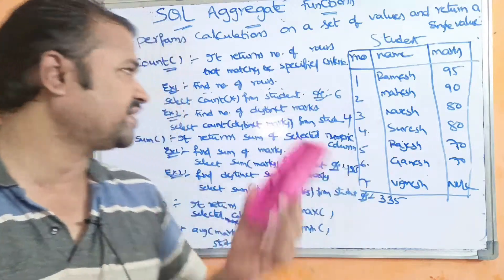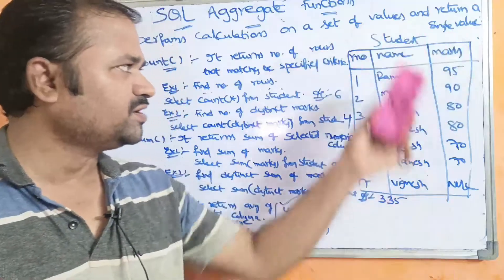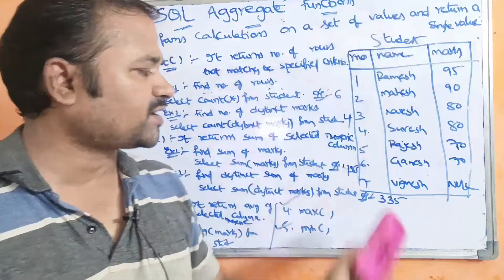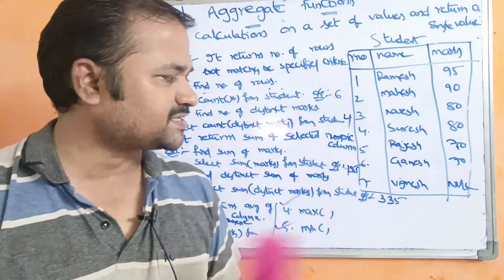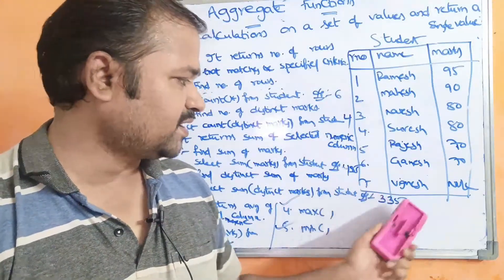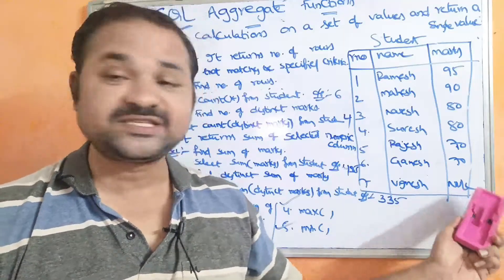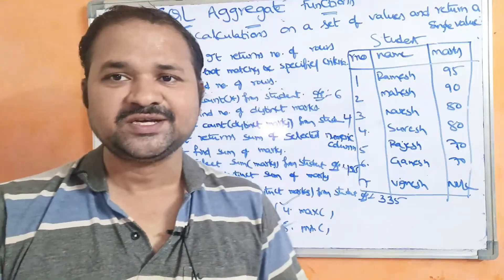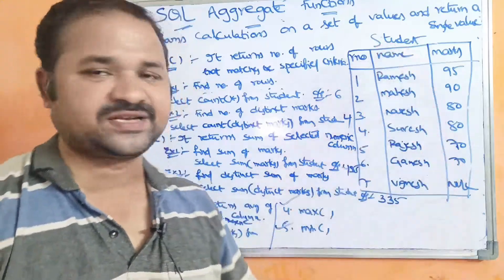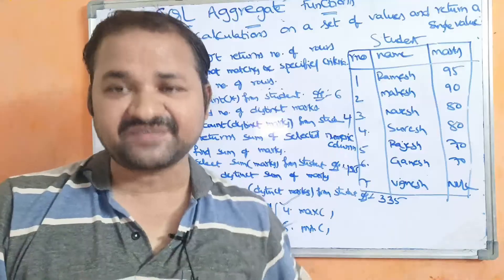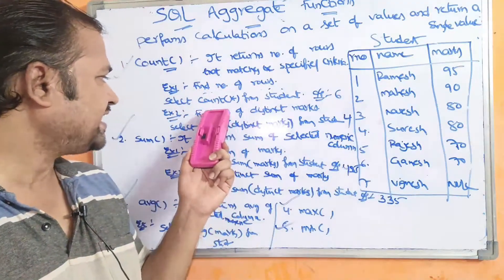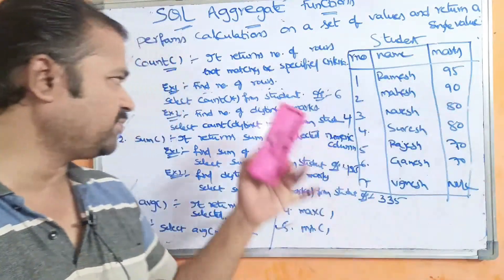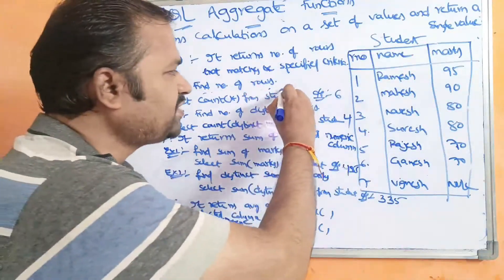Let us see an example. Here we have a student table with three columns: roll number, name, and marks. Totally we have seven records, but the last record's name is Vignesh and the marks value is null. The query to find the number of rows is: SELECT COUNT(*) FROM student. The star gives all rows present in the table.